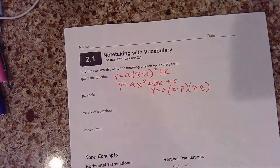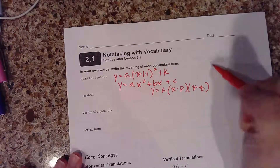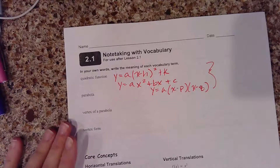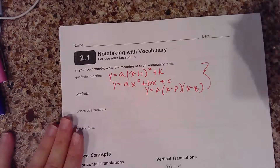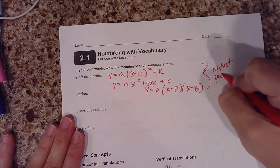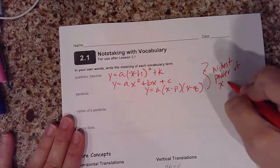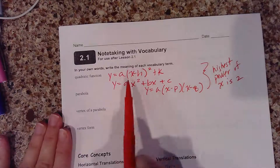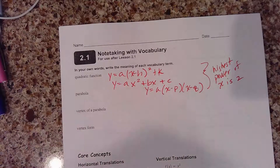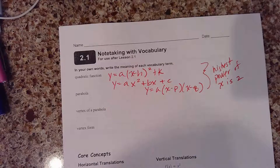Regardless of whatever format you're given, what makes a quadratic function a quadratic — as opposed to a linear, cube root, or square root — is that the highest power of x is 2. There's no x cubed or x to the fourth or anything bigger. There has to be an x squared in your equation for it to be considered a quadratic.